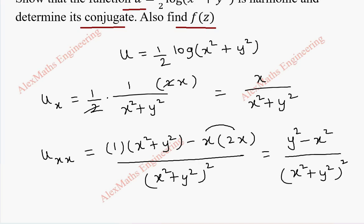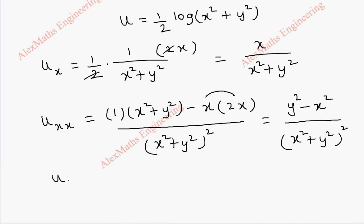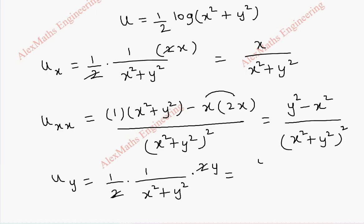In the same way we find uy, which is 1 by 2 into 1 by x square plus y square into 2y, because x square is a constant. After cancelling, we get y by x square plus y square.